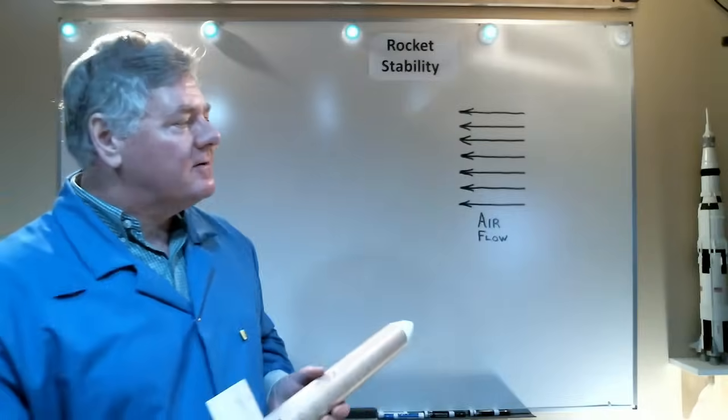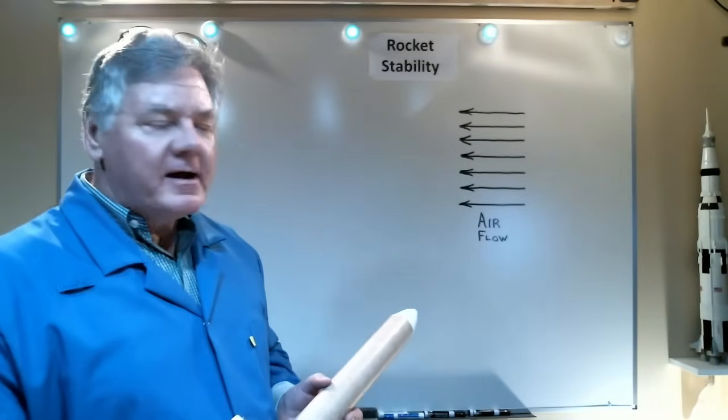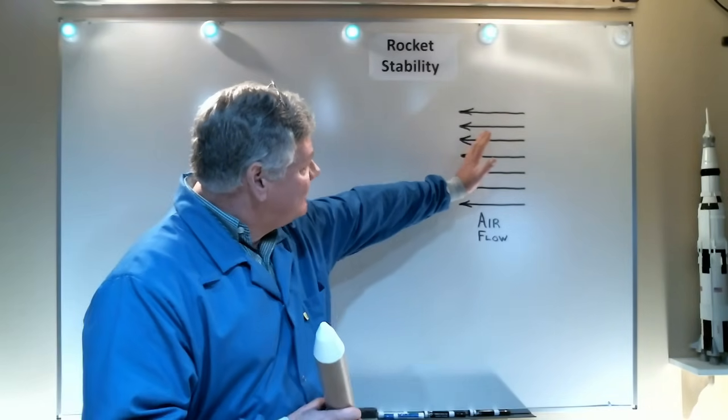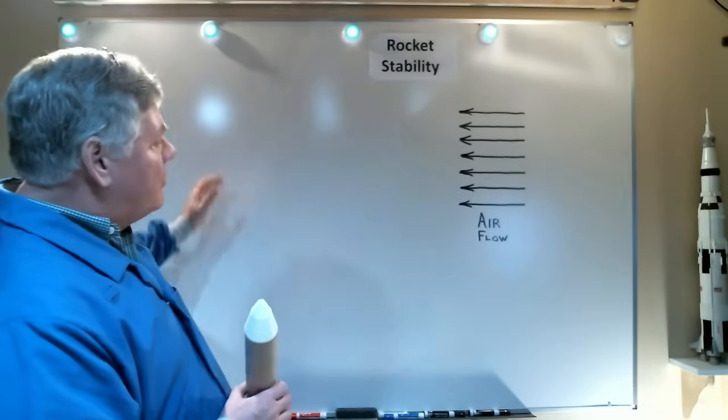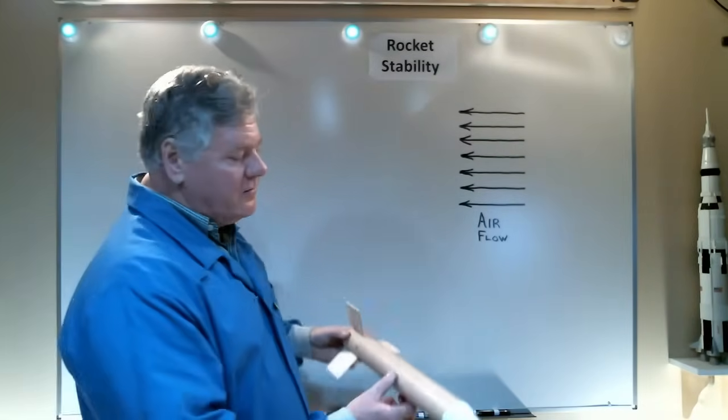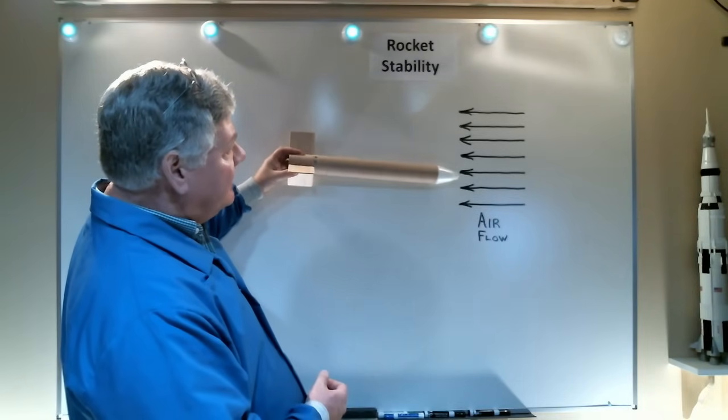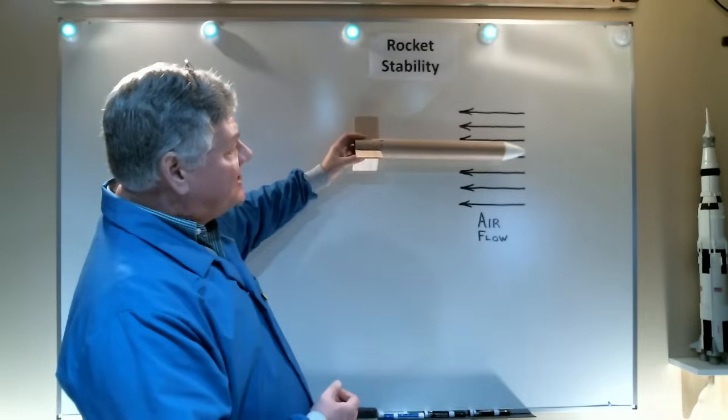So let's talk about what I mean by a stable rocket. This is the airflow represented by these arrows, and it indicates that the airflow is moving across the board. A stable rocket will always want to keep its nose pointed into the airflow. It might oscillate up and down a little bit, but it always flies in the proper direction.